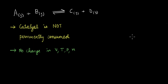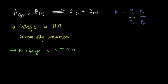Keeping these two points in mind, if we write down the equation for the equilibrium constant for this reaction, it will look something like this: the partial pressure of C times the partial pressure of D — the products — divided by the partial pressure of B times the partial pressure of A — the reactants. And because the catalyst is not consumed, the partial pressure of the catalyst is not going to factor in here. The addition of a catalyst is not changing any of these factors, so the partial pressures will not change.